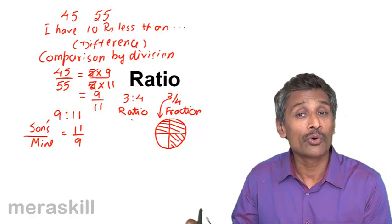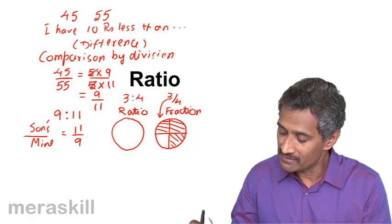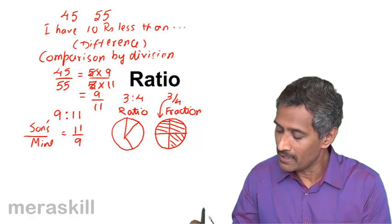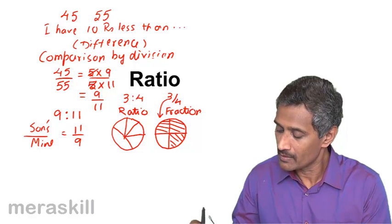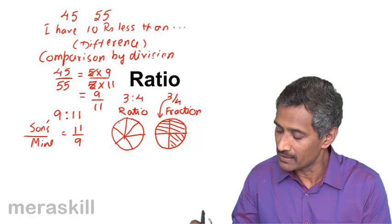But if you take 3 is to 4 as a ratio, the same whole is divided. So you have 1, 2, 3, 4, 5, 6 and maybe 7 equal parts.